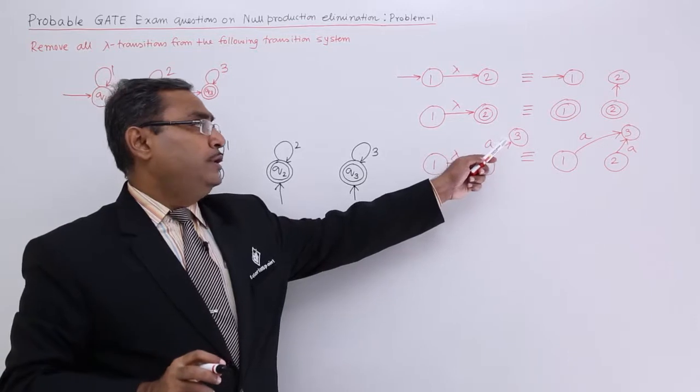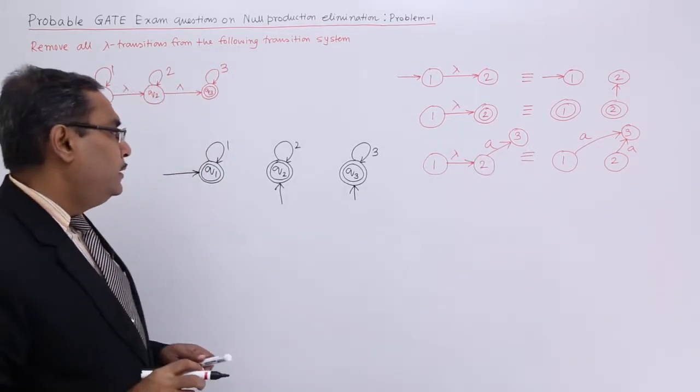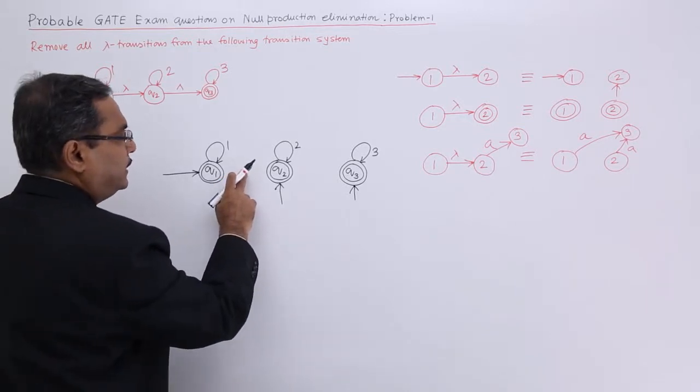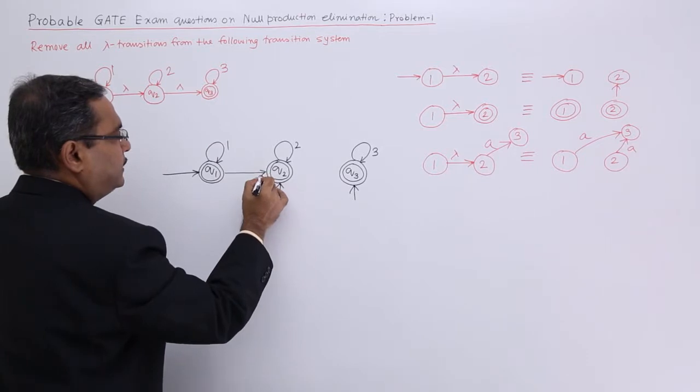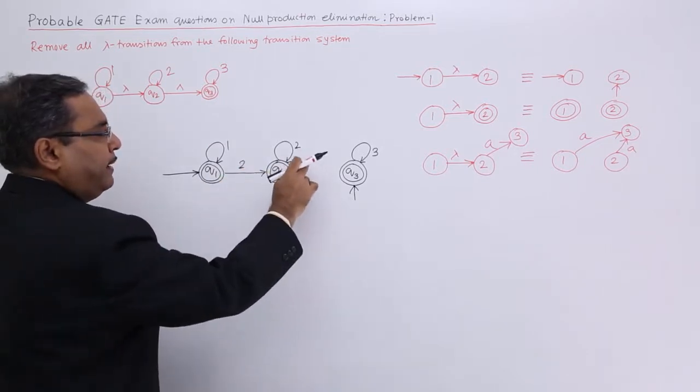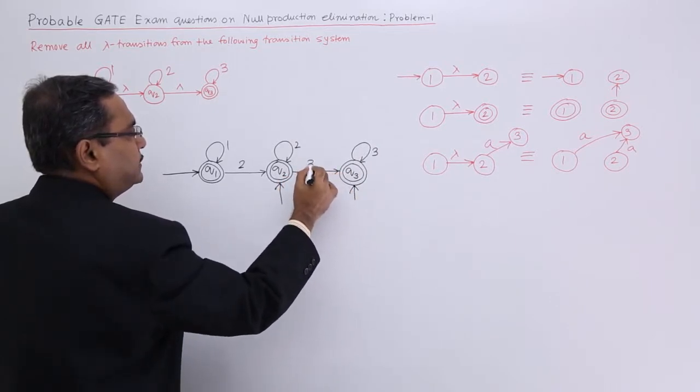Coming to the last. Any outward edge from 2 to 3 will also be drawn from 1 to 3 at the same level. Now, see lambda transition is there and there is one edge is this one. So, I must be having another edge like this. Lambda transition was there. One edge was like this one. So, I should draw another edge like this.